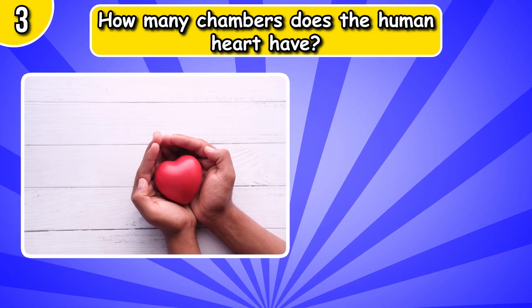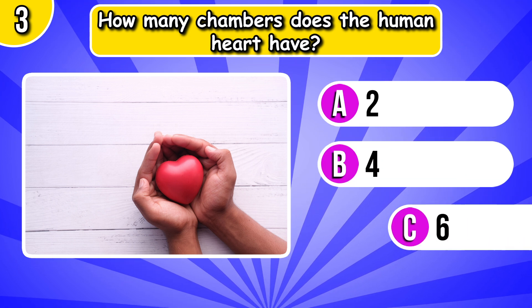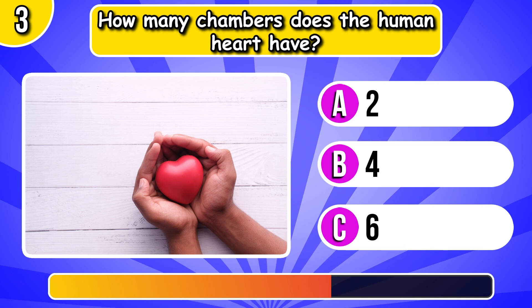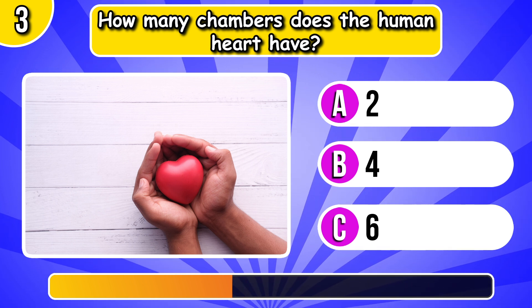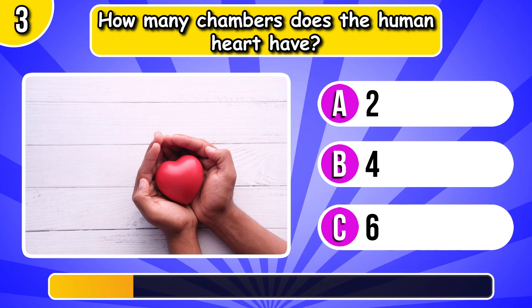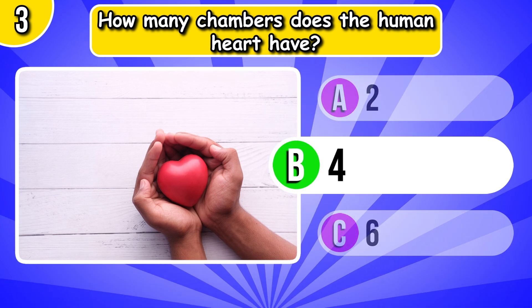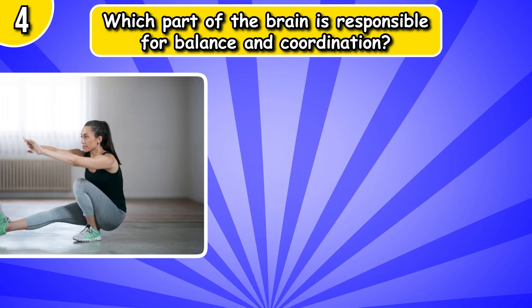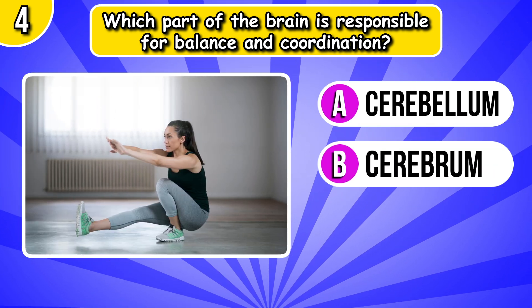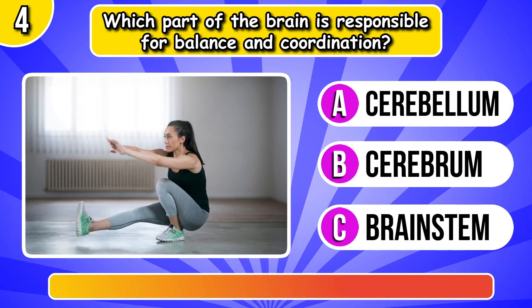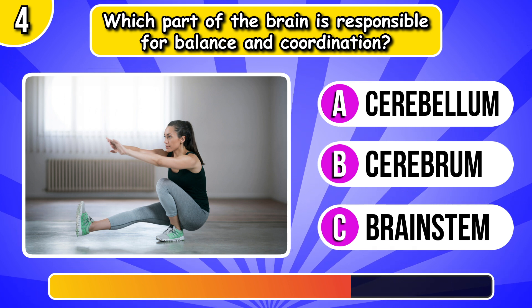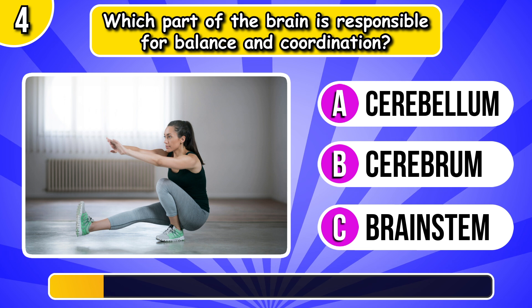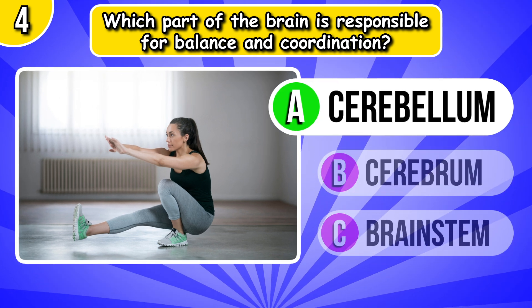How many chambers does the human heart have? Four chambers. Which part of the brain is responsible for balance and coordination? It's cerebellum.